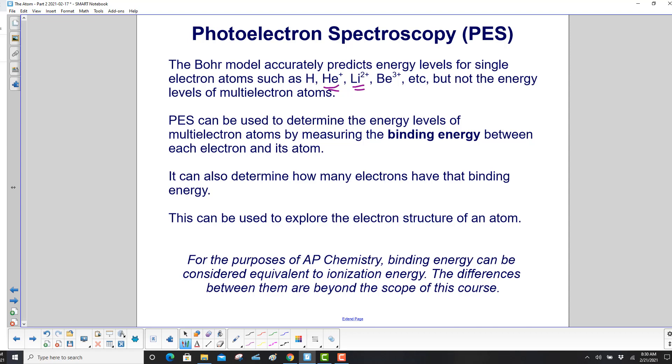PES can be used to determine the energy levels of multi-electron atoms by measuring the binding energy between each electron and its atom. It can also determine how many electrons have that binding energy. This can be used to explore the electron structure of an atom.